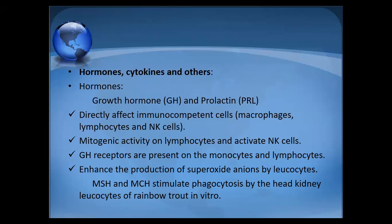Hormones and cytokines include growth hormone and prolactin (stress hormones). Prolactin is used as an anti-stress hormone. These directly affect immunocompetent cells — macrophages, lymphocytes, and natural cytotoxic cells (NCC) in fish. Natural killer cells are found in mammals. Growth hormones have mitogenic activity on lymphocytes and activate natural cytotoxic cells in fish. Growth hormone receptors are present on monocytes and lymphocytes, enhancing production of superoxide anions by leukocytes.